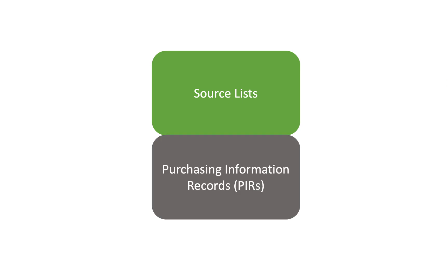Finally, we have purchasing information records, PIRs. These capture the relationship between a material, a supplier, and the pricing at a given time, providing incredible value for purchasing decisions. The accuracy and maintenance of these master data components are fundamental for effective logistics transactions in MM, as they are used across various business processes within SAP S4HANA.